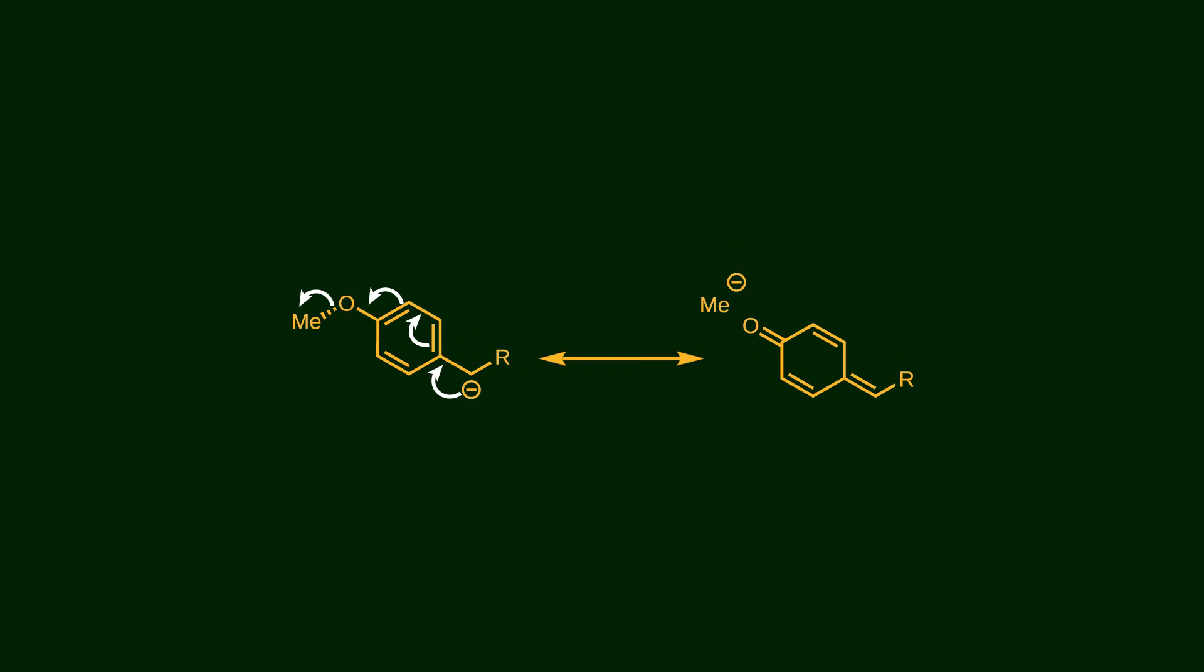We can illustrate this effect using this resonance form. Because the electrons flow toward the anti-bonding orbital of the carbon-oxygen bond, that bond becomes weaker. The carbon-oxygen bond breaks, and the methyl group bears a negative charge.